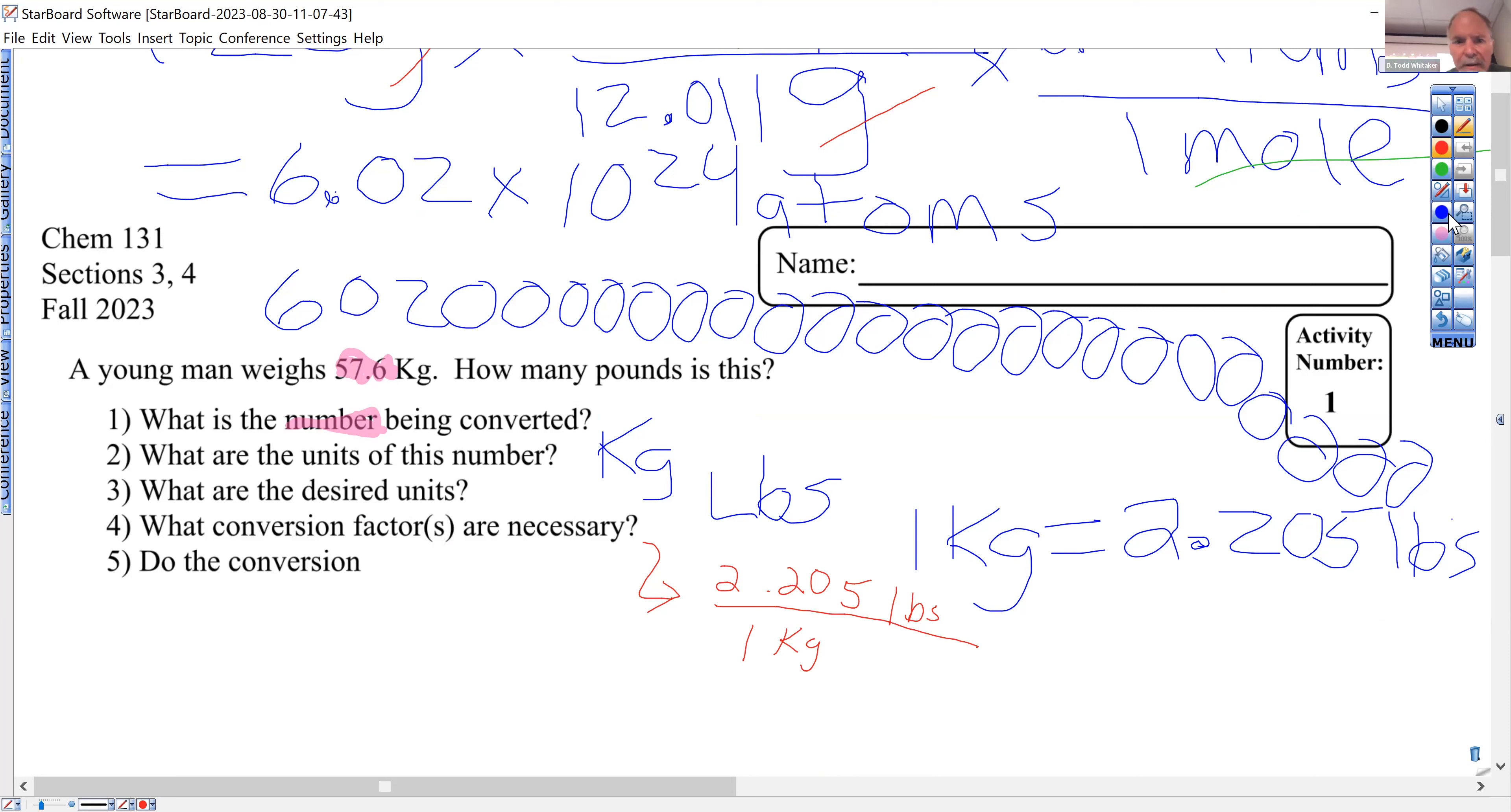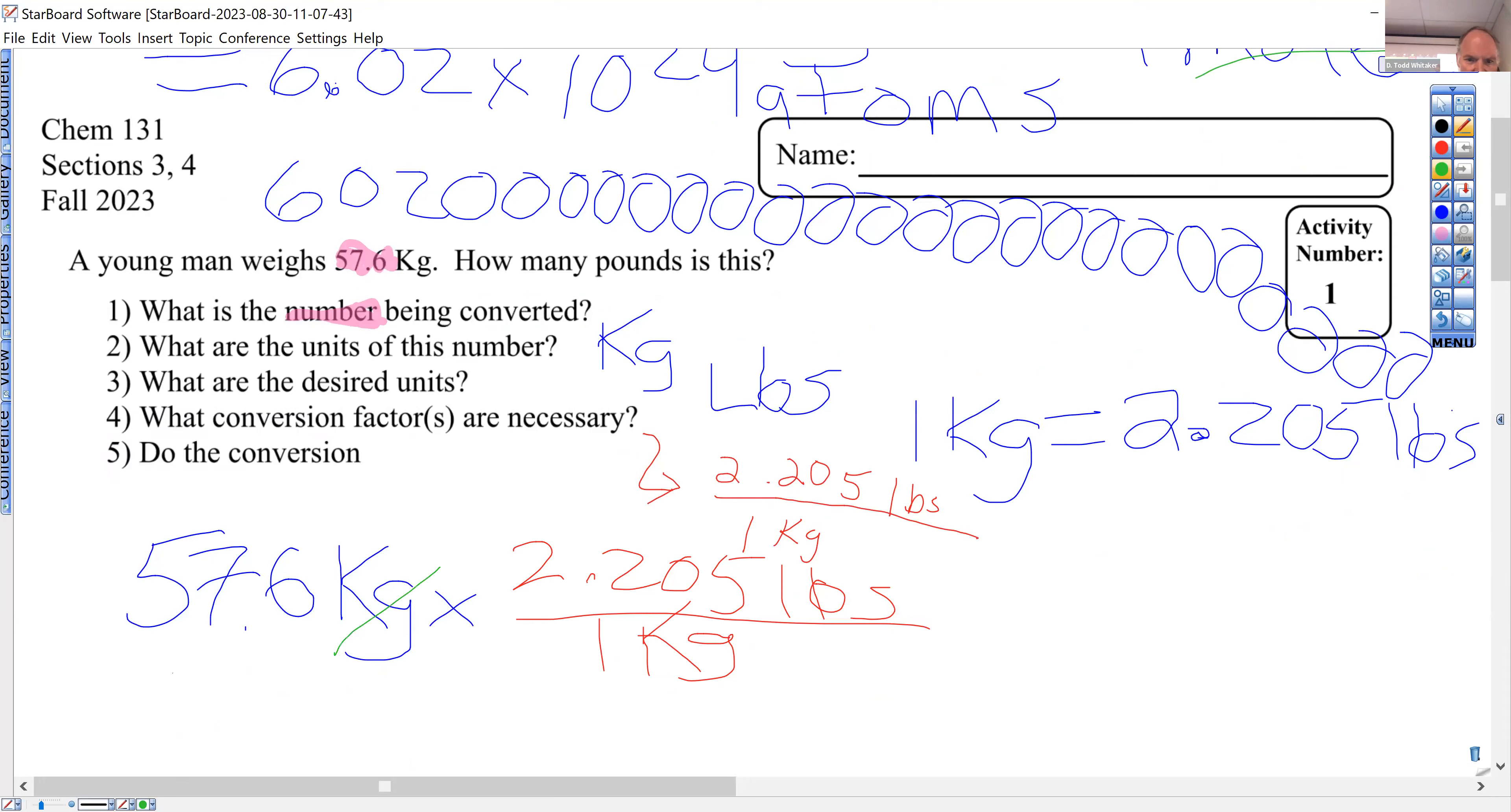Once you pick the conversion factor and you've identified the number and units you need to convert, you're off to the races. Your answer starts with 57.6, copy the red thing because you picked the right one - 2.205 pounds for every one kilogram. What's going to happen to those kilograms now? They're going to cancel because we have them on the top and the bottom. Green is good for canceling.